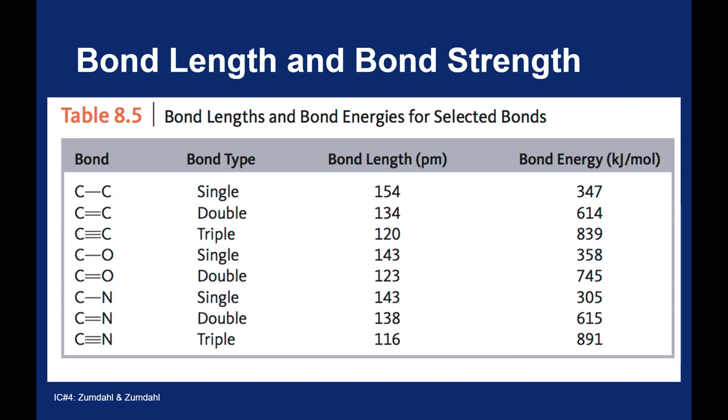The stronger the bond, the shorter it gets. So for example, we have a carbon-carbon single bond, a carbon-carbon double bond, and a carbon-carbon triple bond.